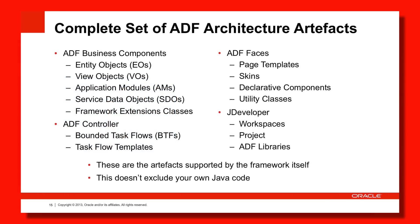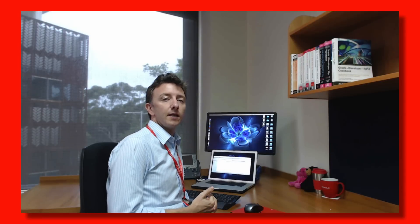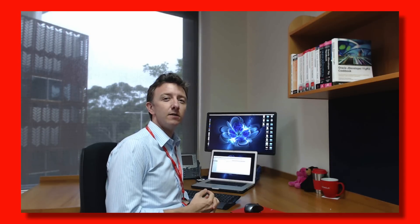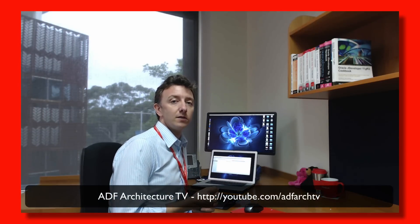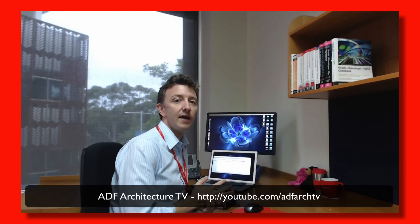In conclusion, it is the ADF Business Components, the ADF controller objects such as bounded task flows, and the ADF Faces objects such as page templates, skins and declarative components — as well as your own extensions, utility and Java classes — that define the architecture of your ADF system. As we've investigated in this episode of the ADF Architecture TV channel, it's all defined by the reusable components of the layers of the ADF stack: ADF Business Components, the controller layer and ADF Faces. If your task as a team leader or architect is to define the architecture of your ADF application, you should be thinking in terms of those reusable components that ADF promotes. Please sign up and join us for more episodes of the ADF Architecture TV channel.